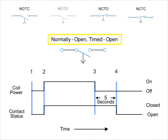Next, we have the normally open, timed open contact. Similar to the normally open, timed closed contact, this type of contact is normally open when the coil is unpowered or de-energized, and closed by the application of power to the relay coil.